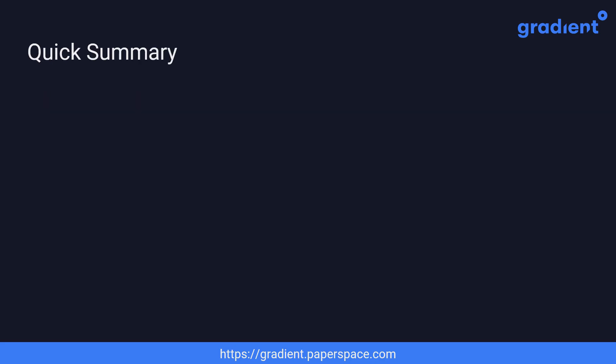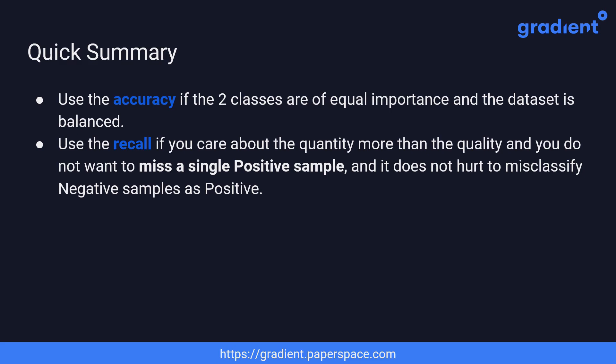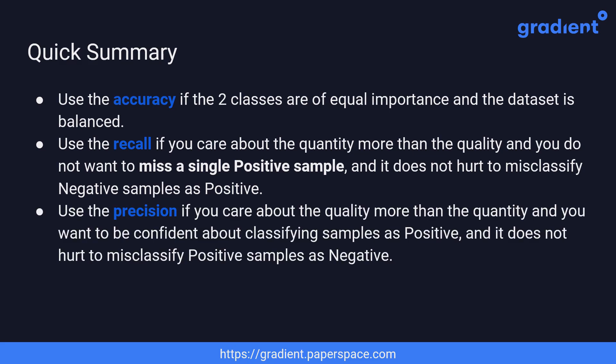To recap: we discussed how to use the confusion matrix for evaluating classifiers. The three metrics are: accuracy — used when both classes are equally important and the dataset is balanced; recall — used when you care about classifying all positives correctly without missing any, regardless of how negatives are classified; and precision — used when you want confidence in classifying a sample as positive, even if some positives are missed.